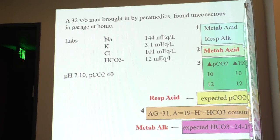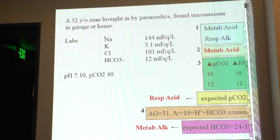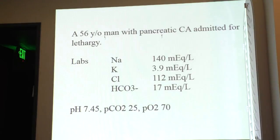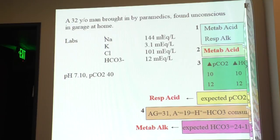You can impress your attending with that. What does he have? What else is in the garage? Ethylene glycol. Gap metabolic acidosis from ethylene glycol, respiratory acidosis from respiratory failure, and metabolic alkalosis — maybe he was vomiting. Classic finding in the urine: envelope-type calcium oxalate crystals. You're going to get this question on the boards — I remember they asked about triple acid-base when I took internal medicine boards six years ago. Make sure you're comfortable with these exercises.